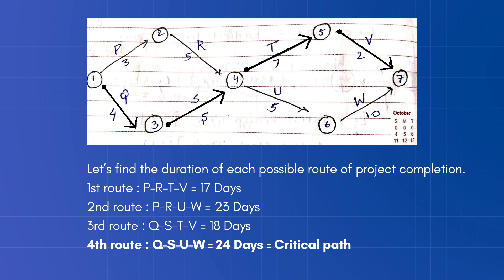The third route is Q, S, T, V. Here, 18 days will be consumed.